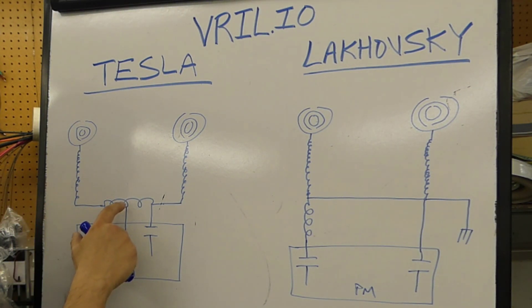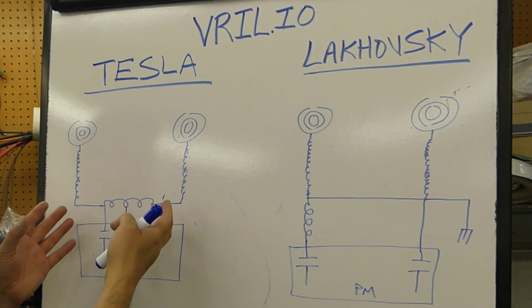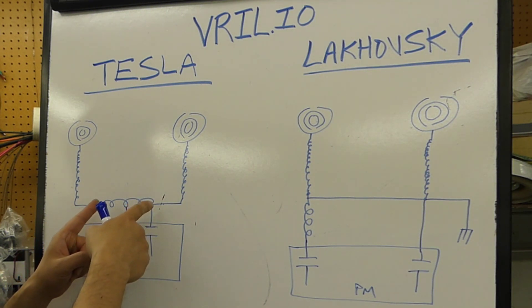This is a center tap on that primary, grounding it to the chassis case. This is just good practice, and this would be called a balanced system.